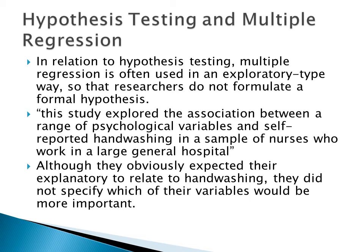In standard multiple regression, nothing weighs more than another variable. For example, if we're looking at nurses and psychological variables — anxiety, depression, mild or moderate depression, bipolar disorder — they're all going to weigh the same when put into SPSS. We're not going to say one has more of an effect going in; in the end result we'll see if it does. Although researchers expected the explanatory variables to relate to hand washing, they did not specify which variables would be more important going in.